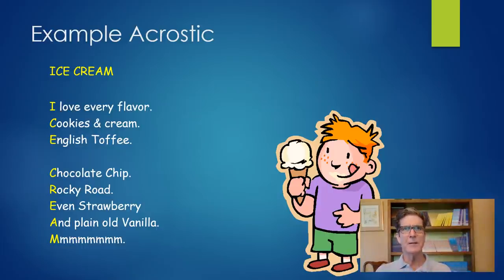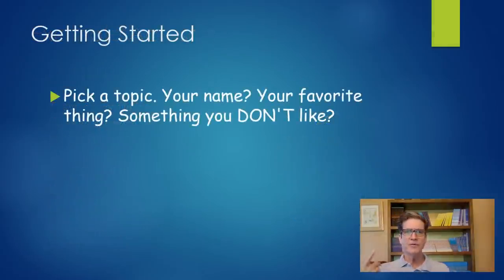So let's see about creating an acrostic poem of our own today. First thing you need to do is pick a topic. Maybe use your name or maybe use your favorite thing, your favorite sport, your favorite food, your favorite video game, or maybe even write about something that you don't like.